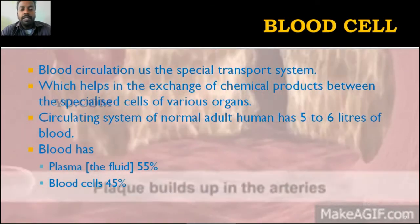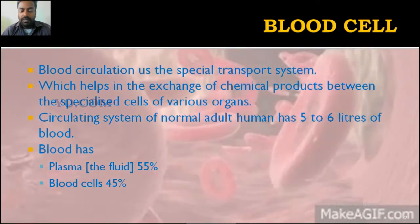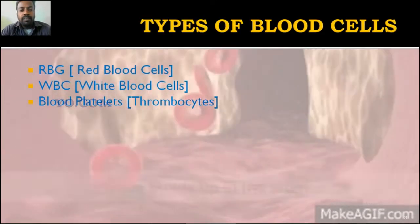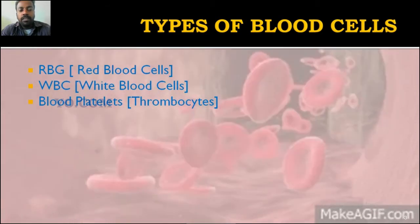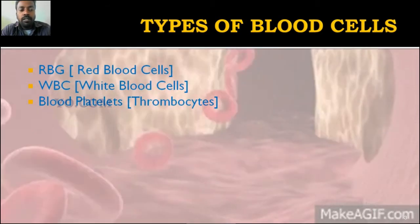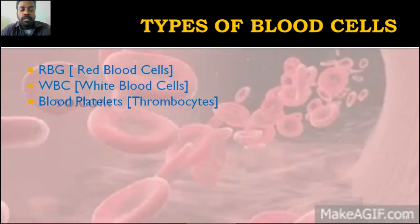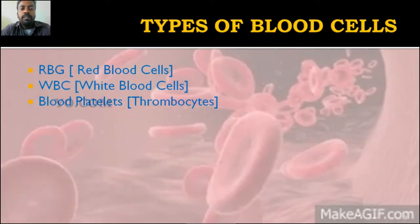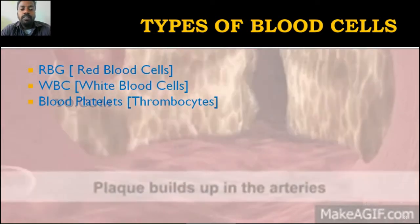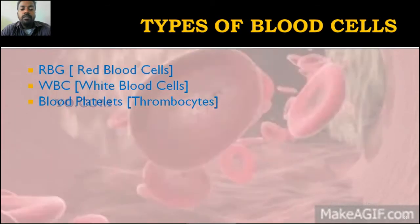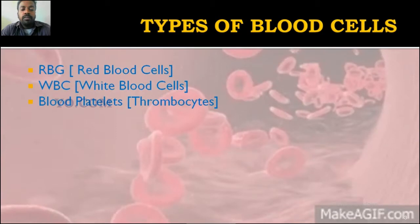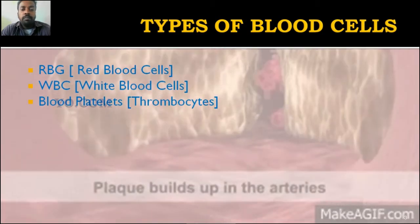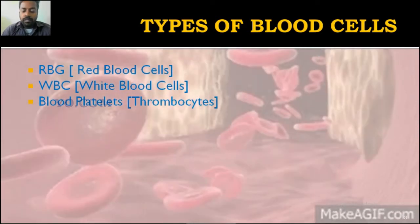Every blood cell has some separate function. There are three different types of blood cells: first, RBC (red blood cells); then WBC (white blood cells); and then blood platelets, which are also called thrombocytes.